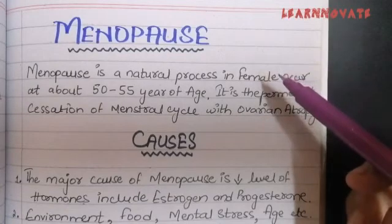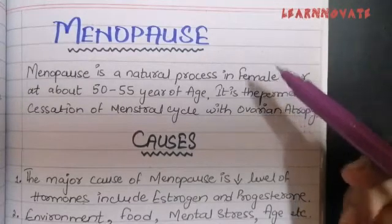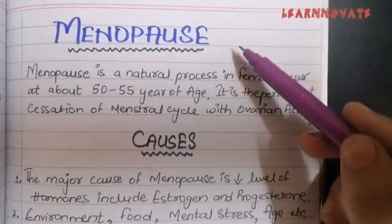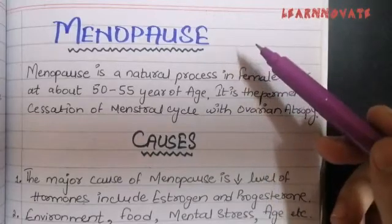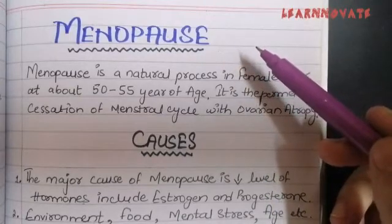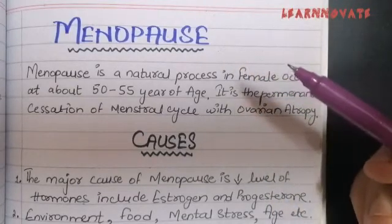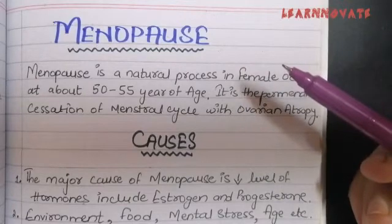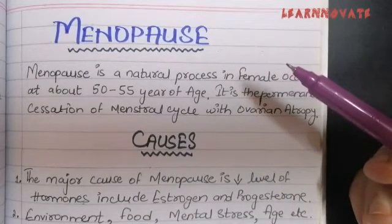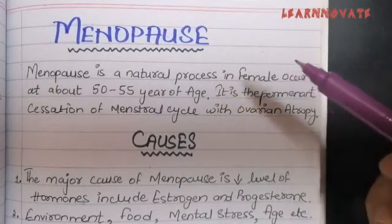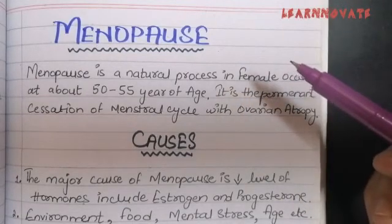That age or period of life is called menopause, which occurs in the majority of females in their 40s and 50s. This is a natural phenomenon — it is not a disease.